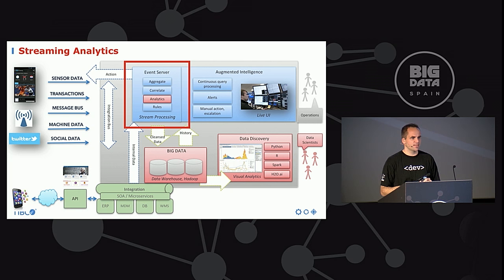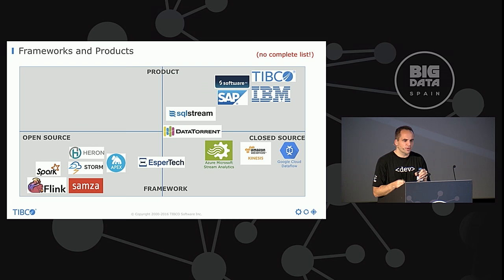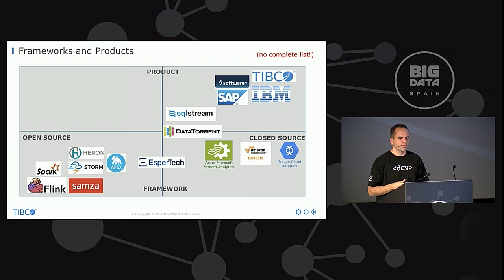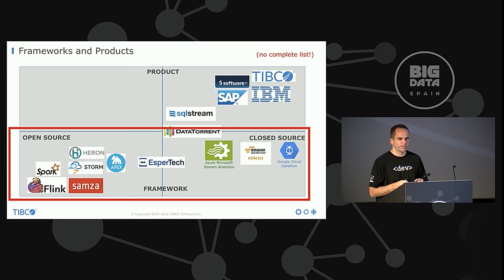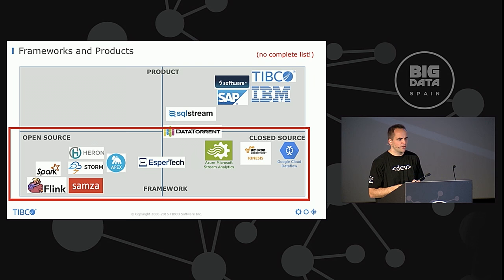The second part — the analytics part — is the more interesting one, because this is about a new concept and new thinking. The data ingestion thinking is still the same: integration, filter, transform. But the power of streaming analytics comes with the event processing and correlation of events. For that, there are many frameworks and products. Frameworks available in open source include Apache Flink, Apache Apex, Apache Spark Streaming, Apache Storm, and Heron — the newcomer from Twitter used instead of Storm. It's a growing space with many different frameworks. There are also cloud services with closed-source offerings.